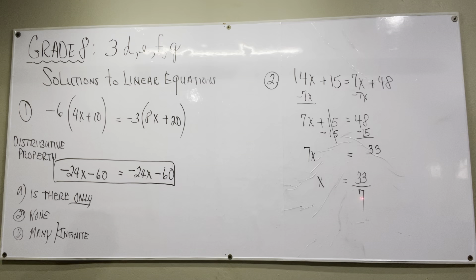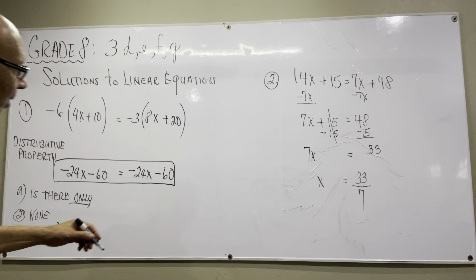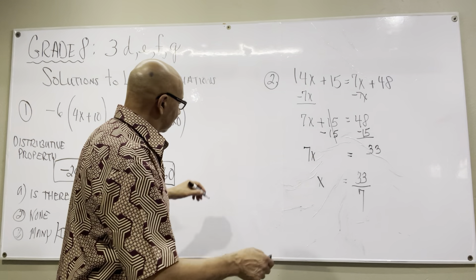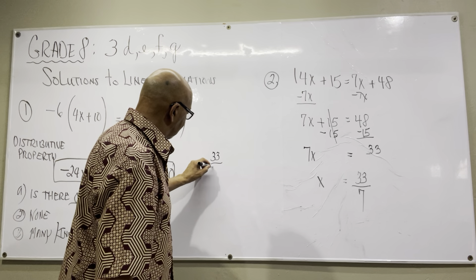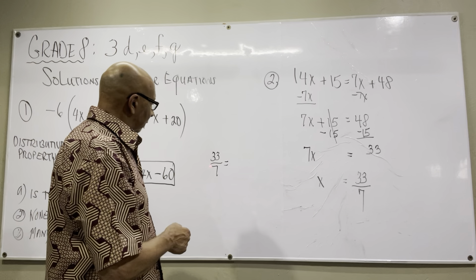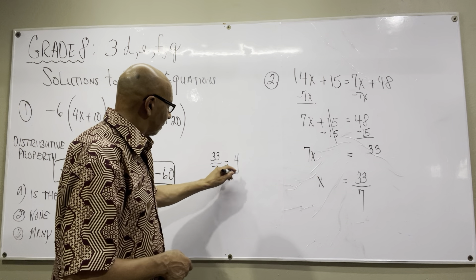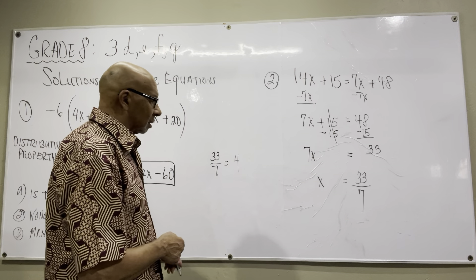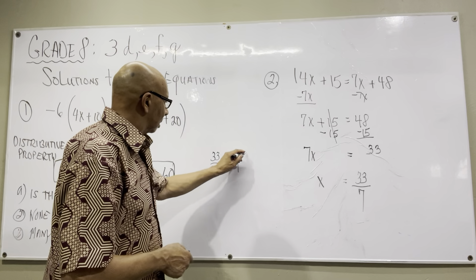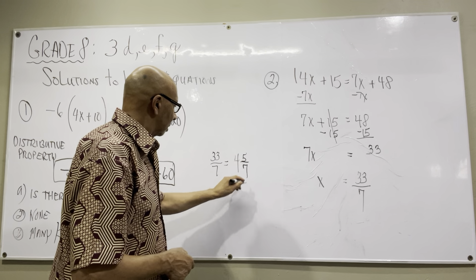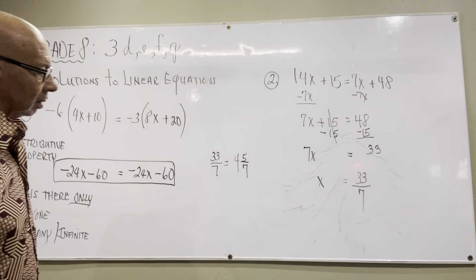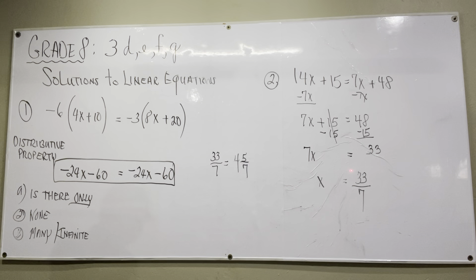So x equals 33 over 7. If I convert that to a mixed number: 7 times 4 is 28, and that leaves 5 remaining, so it's 4 and 5/7ths. Depending on the answer choices shown, either 33 over 7 or 4 and 5/7ths will be the correct choice.